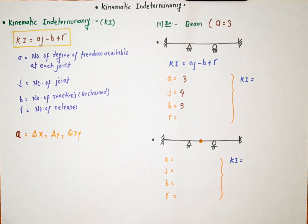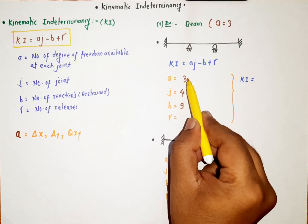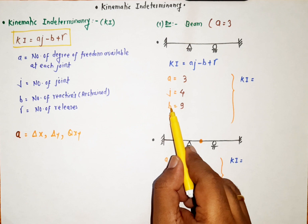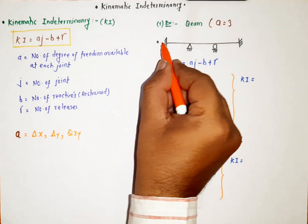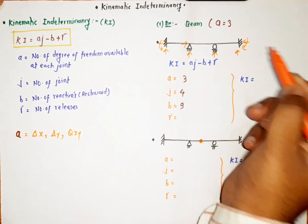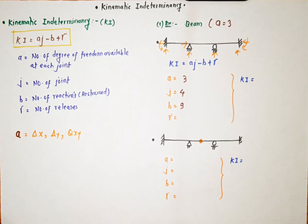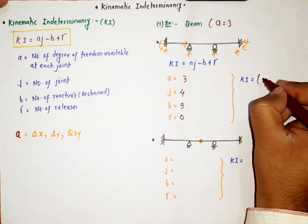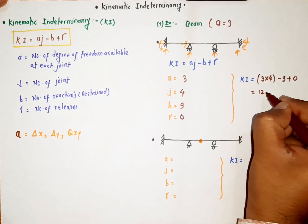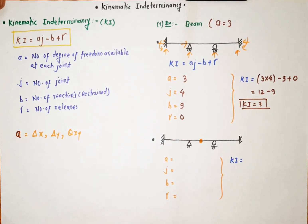Let us calculate some problems using this formula. For this beam, a = 3 (that is theta, delta x, and delta y), and joints j = 4. For b, the number of restrained reactions: for the fixed support there are 3, for the hinge there are 2, and for the roller there is 1 — so 3 + 3 + 2 + 1 = 9. There is no internal hinge, so γ = 0. Therefore kinematic indeterminacy = 3 × 4 − 9 + 0 = 12 − 9 = 3.